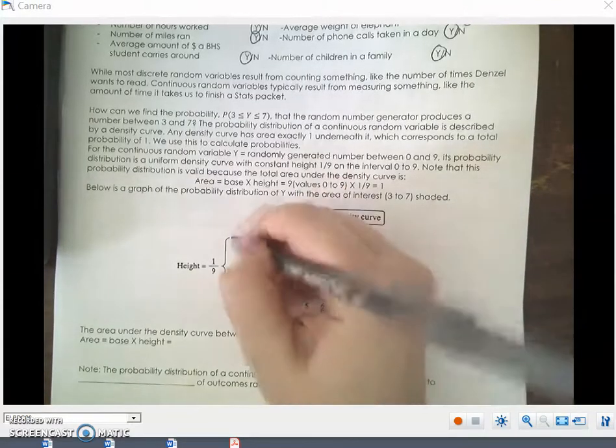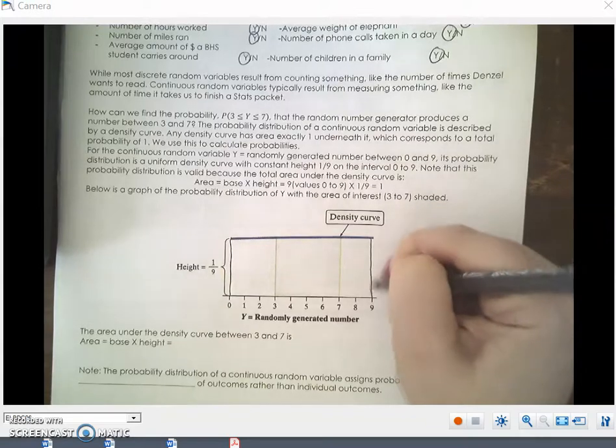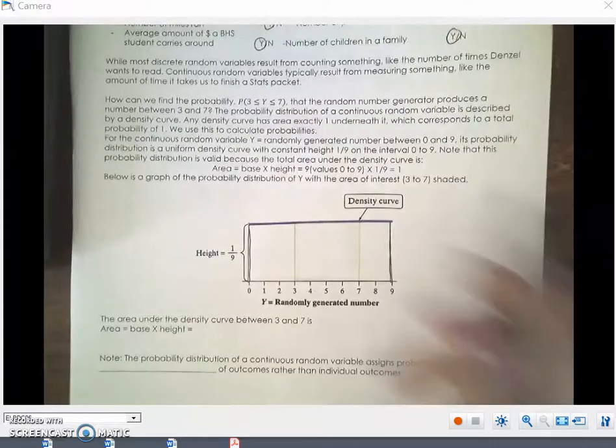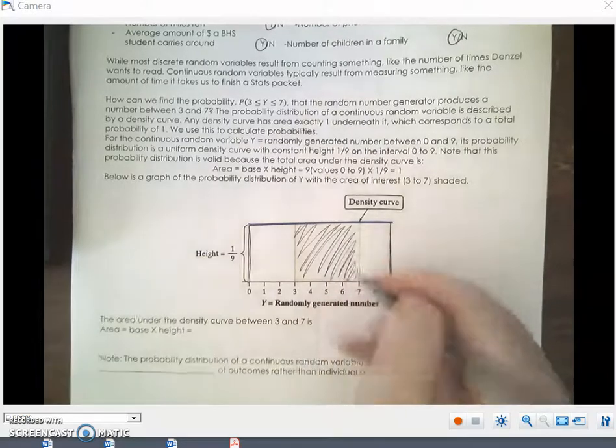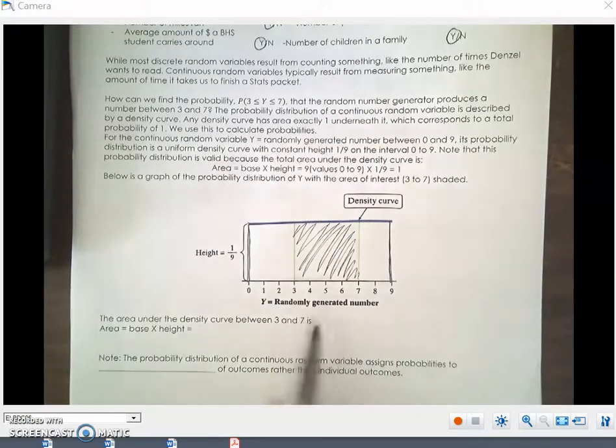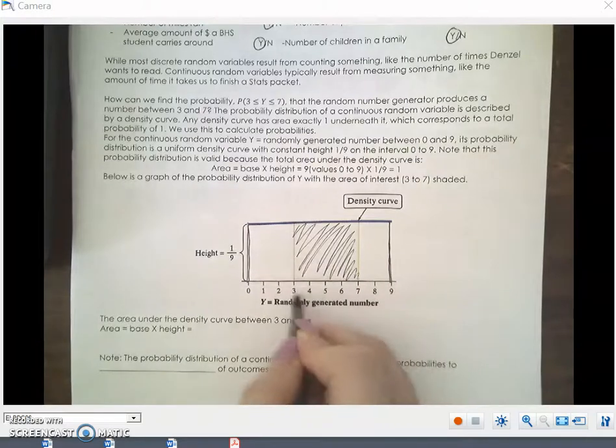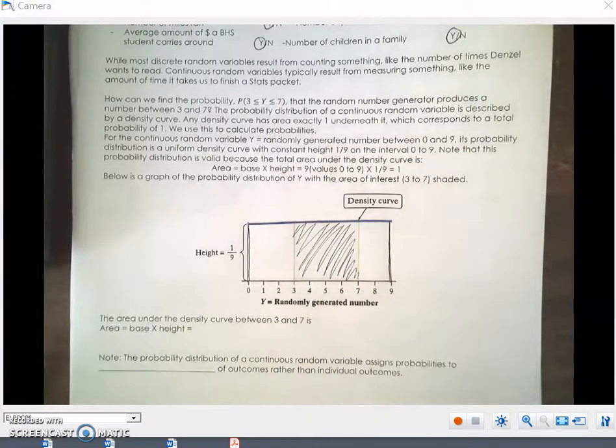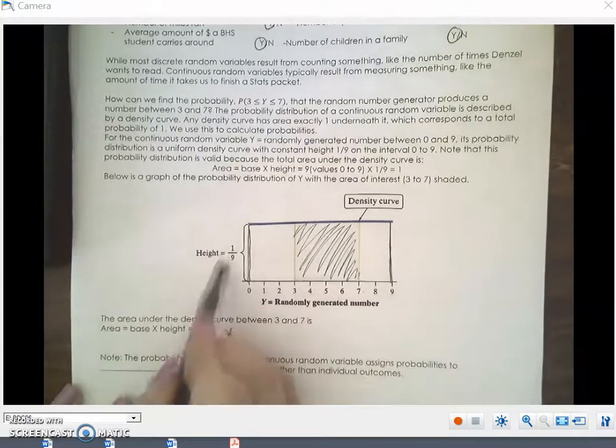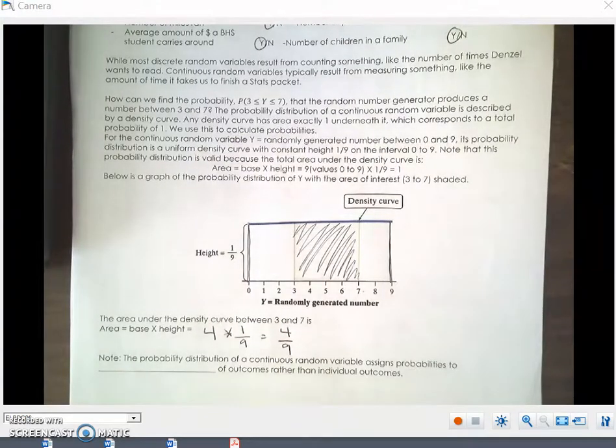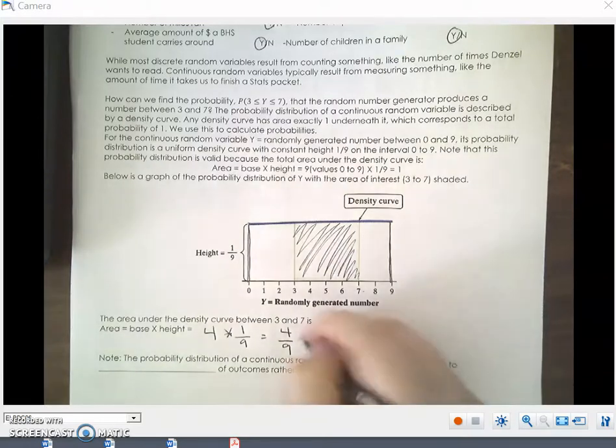Below is a graph of the probability distribution y with the area of interest 3 to 7 shaded. This whole entire thing is the density curve. But if we want the probability of getting a number between 3 and 7, we're just looking at this box right here. So the area under the density curve between 3 and 7 is base times height. Our base would be 1, 2, 3, 4, which makes sense. 7 minus 3 is 4. So 4 times our height is 1 ninth equals 4 ninths. So the probability of getting a number between 3 and 7 would be 4 over 9, which as a decimal is 0.44.